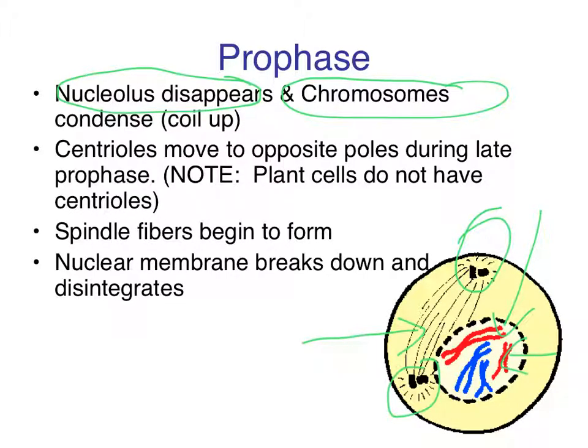Then the nuclear membrane will start to dissolve and disintegrate so that the genetic material can get out — otherwise it wouldn't fit through the little tiny pores. And don't worry, new nuclei are going to form later.